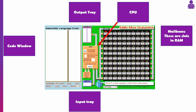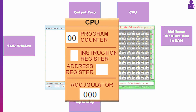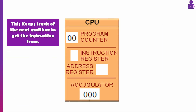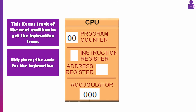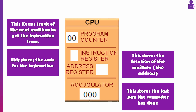Here we've got the Peter Higginson LMC simulator. We've got a code window, an output tray, the CPU itself, mailboxes, and the accumulator. The top register is the program counter, which you should already know about — it stores the address of the next instruction. In this case that refers to those 100 mailboxes. We don't have things like the MDR, MAR, or CIR — it's a much more simplified version, so we just have the instruction register. Think of that as a CIR.